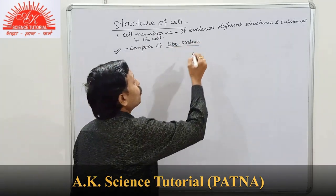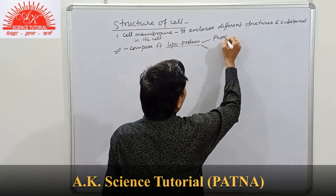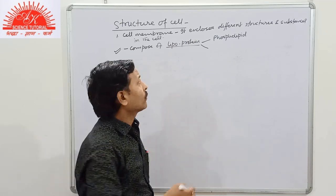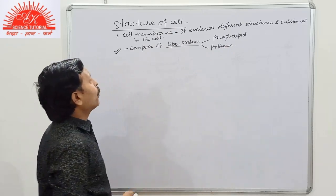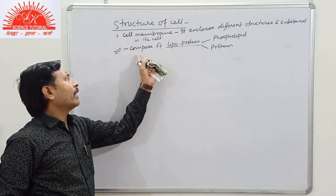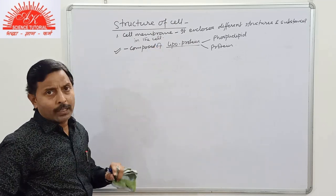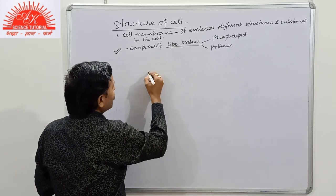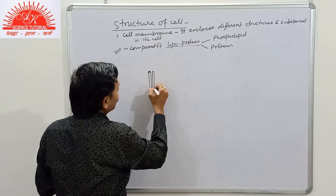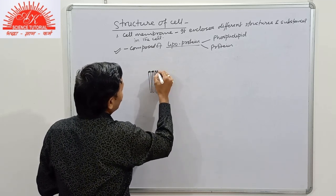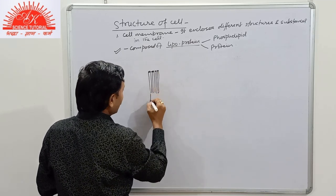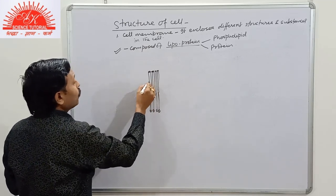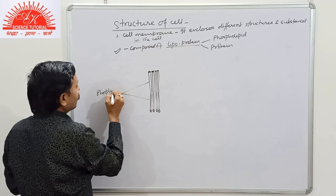The cell membrane is composed of two substances: phospholipid — which may be made up of lipid and cholesterol — and protein, together known as lipoprotein. At Class 9 level, we can directly write it is composed of lipoprotein. In this membranous structure there are two layers of phospholipids stacked together.